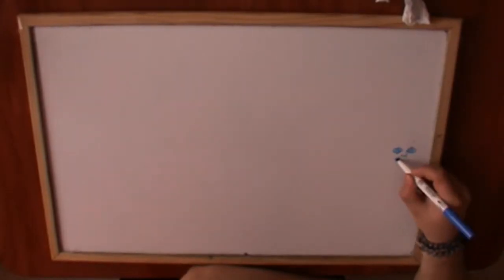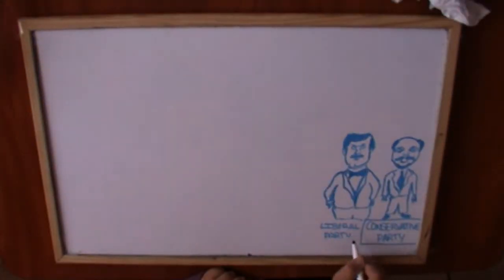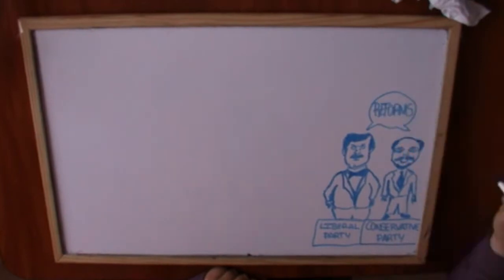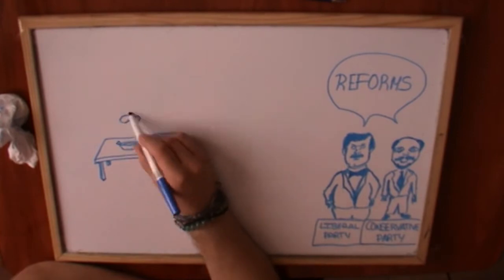Some politicians of the dynastic parties, like Antonio Maura from the Conservative Party and José Canalejas from the Liberal Party, tried to make reforms from above to avoid a revolution from below. But these reforms didn't improve the workers' life too much.